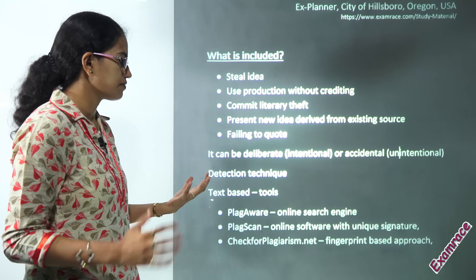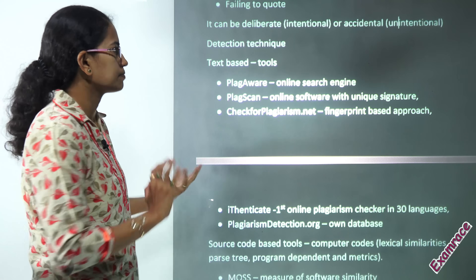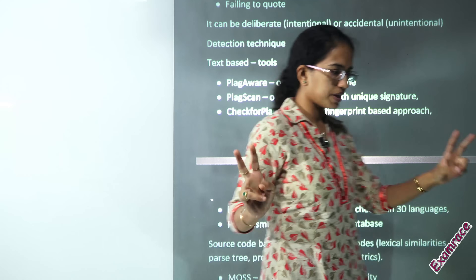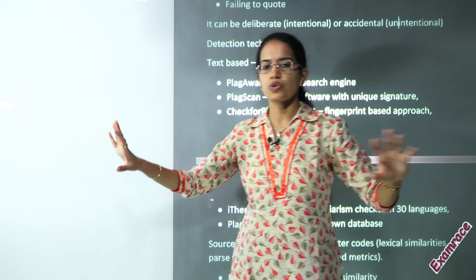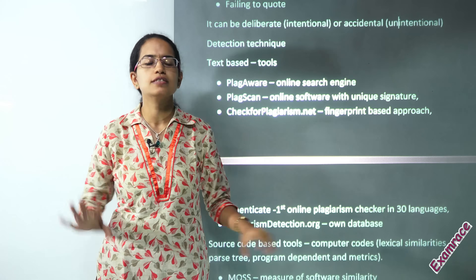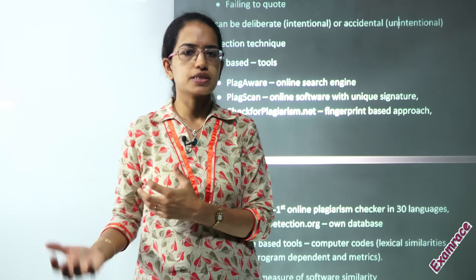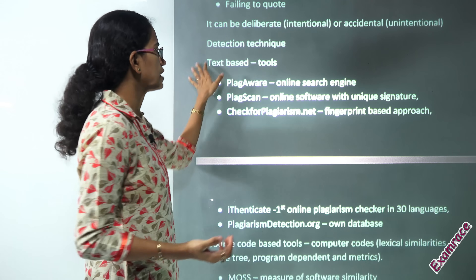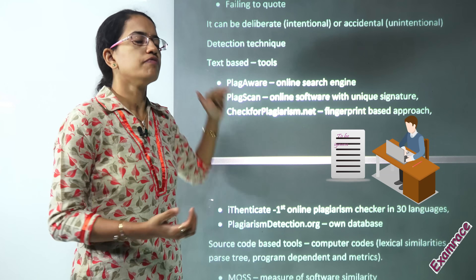When we talk about detection techniques under plagiarism, we talk about two basic categories: text-based and source code. Text-based is usually used for academic purposes, however source code is used for computing purposes.